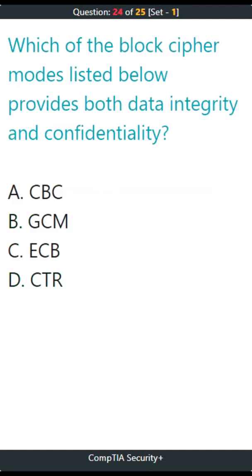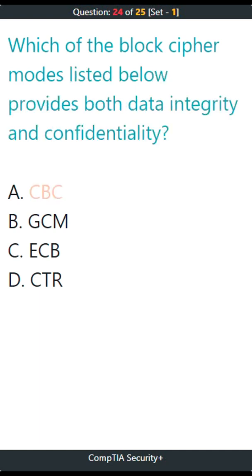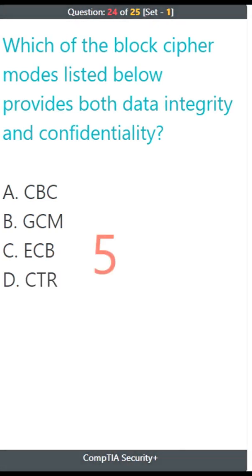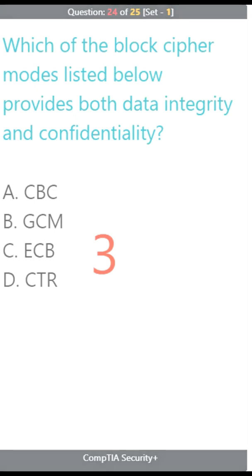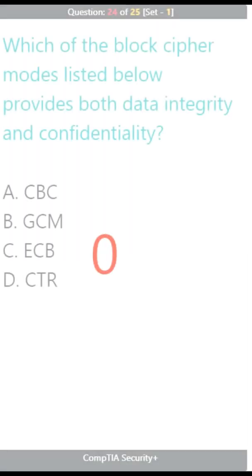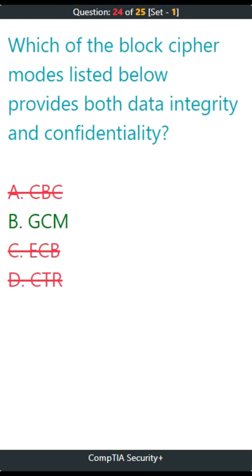Question 24. Which of the block cipher modes listed below provides both data integrity and confidentiality? A. CBC, B. GCM, C. ECB, D. CTR. The correct answer is B. GCM.